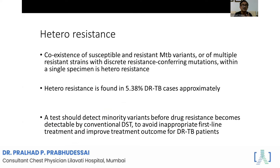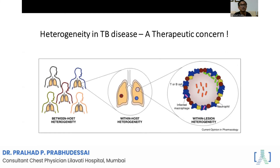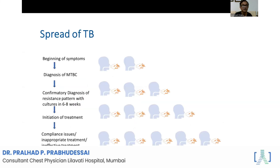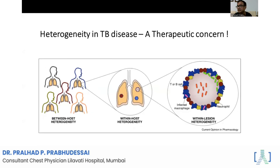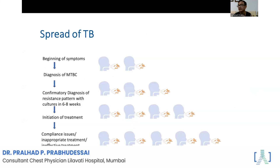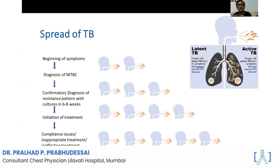That is the whole reason we are moving to shorter regimens in managing MDR treatment — so that compliance will be better. Hetero-resistance is another challenge: it means coexisting susceptible and resistant bacteria in the same person, either in the same lung area, different lung areas, or in multi-organ tuberculosis involvement. For example, the lung may be sensitive and the brain may be resistant. Hetero-resistance is found in around 5.38% of drug-resistant tuberculosis cases. If you can diagnose hetero-resistance early — whole genome sequencing has a role here — we can probably treat them better from the beginning, leading to better disease control and less latent TB in contacts.